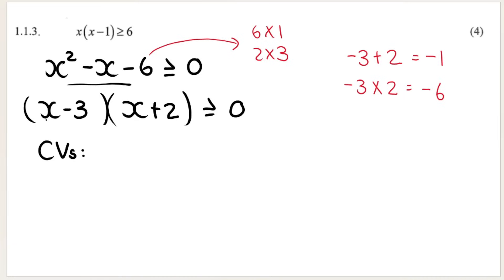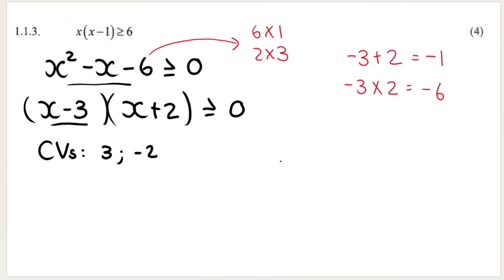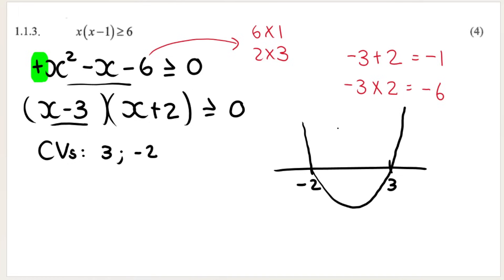If I take x minus 3 and make it equal to zero, x would be positive 3 — that's one critical value. And x plus 2 equals zero gives x equals negative 2 — that's the other critical value. I use these critical values to help draw my parabola. Put the smaller critical value on the left: negative 2, then 3, like a number line. The coefficient of x squared is positive, so this is a happy, smiley-face parabola. The critical values must be plotted on the parabola.